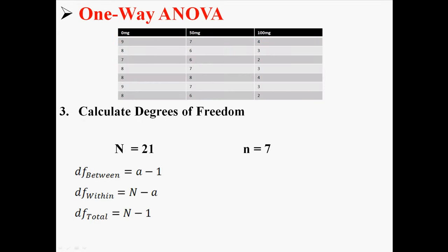So these are the equations for the degrees of freedom. You see we have N, we have A, we have 1. A refers to how many levels of the factor that you have. So in this case we have three levels: 0, 50, and 100.